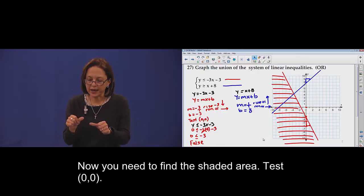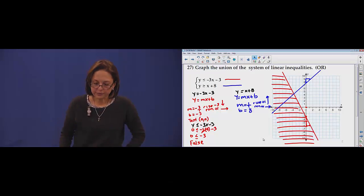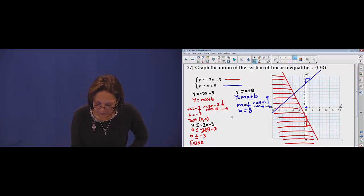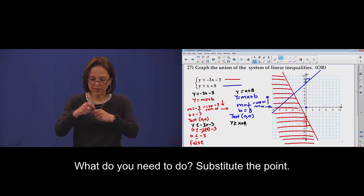Now find this shadow area, test zero zero. What you do, substitute the point.